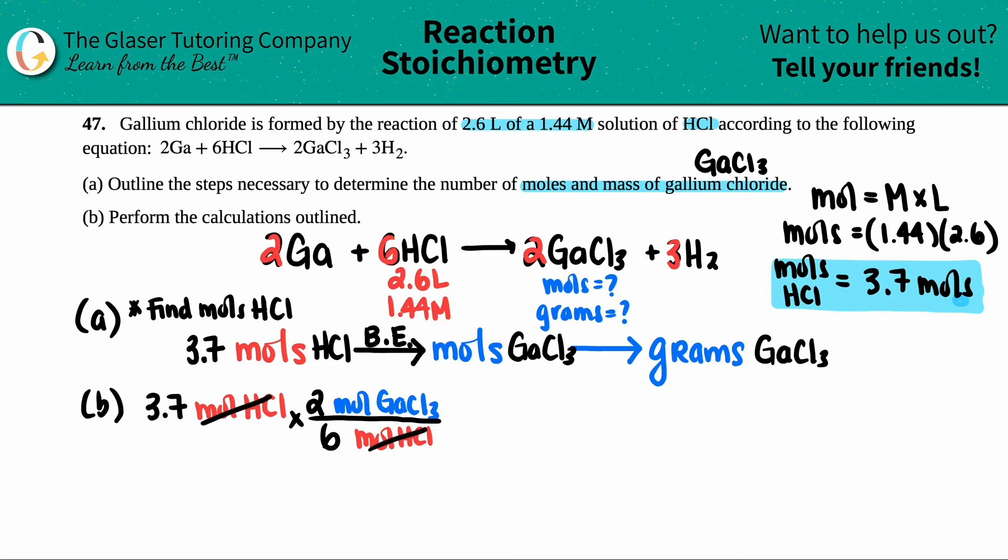So now I'm just going to cancel out the units that cancel. And since this is one of the answers that I want, they wanted moles of gallium chloride, I'm just going to say equal. Now you can simplify this if you want, right? This two will cancel out to a one and this will be a three, but you can just multiply by two and divide by six. So I'm going to say 3.7 times two divided by six. Sticking with the two sig figs, I have 1.2 moles of gallium chloride. Okay. One part down.